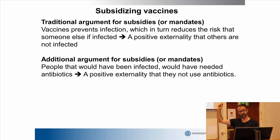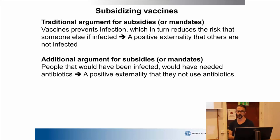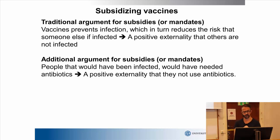The reason why we want to do that is that these vaccinations will provide a positive externality. They will reduce the extent of diseases, which will reduce the use of antibiotics. So there are two positive externalities of having a vaccination: fewer people will be sick, and we will have less use of antibiotics.